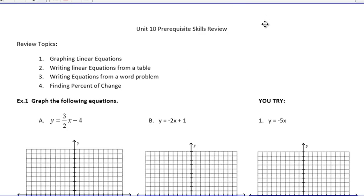Before we get into Unit 10, which is our next chapter, we want to do a prerequisite skills review with you. The topics that we want to go over are graphing linear equations, writing linear equations from a table, writing equations from a word problem, and finding the percent of change. You've all seen it before, but we're bringing back these topics so that hopefully it'll help you out while learning Unit 10.